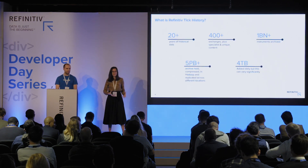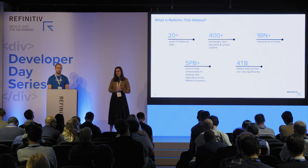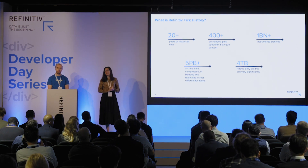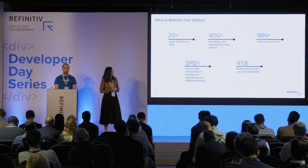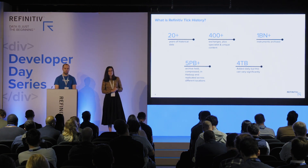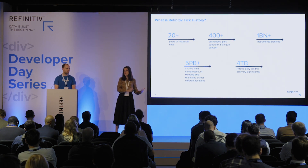Our tick history archive has over 20 years of history and covers 400-plus exchanges, OTC, and specialist data sets. It's a big data set — it can take a while to get truckloads of tape shipped to a customer site, or literally a couple of days to compute over this data. The world has changed, and that's why Refinitiv is making sure we're up to speed. This five-petabyte archive, which grows daily, has over 1,500 active users covering use cases from sell side and buy side, and from front, middle to back office.